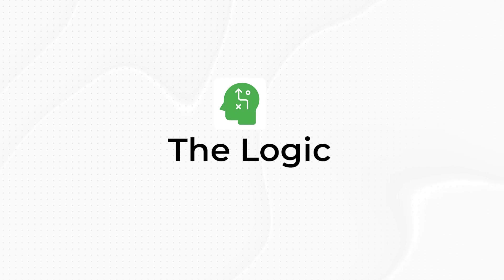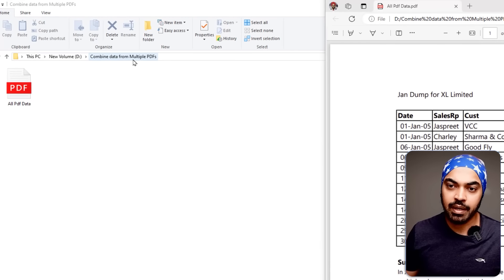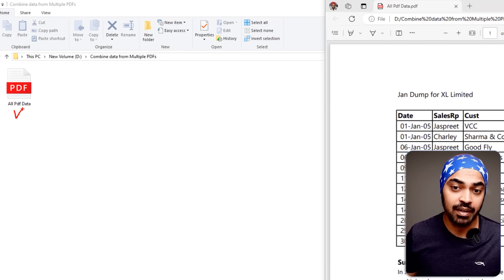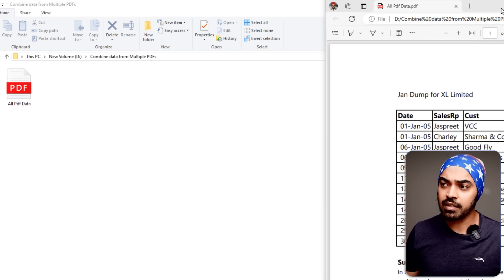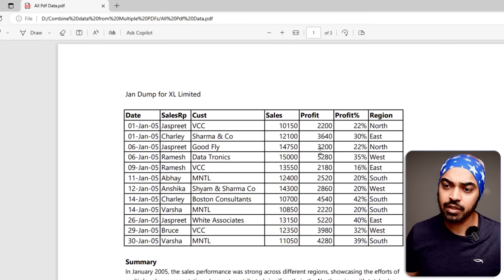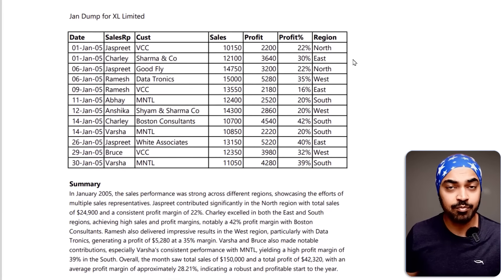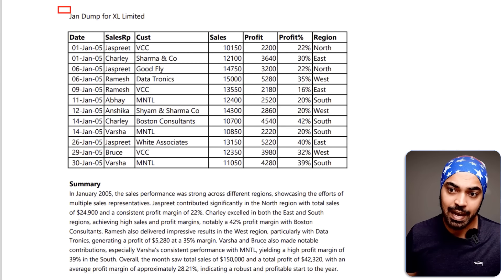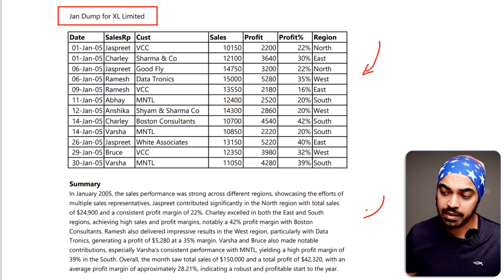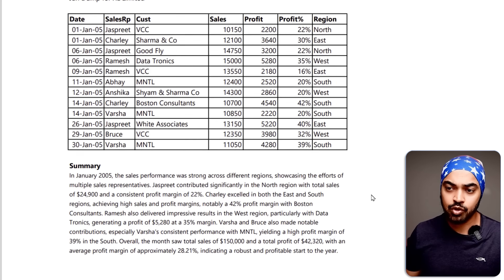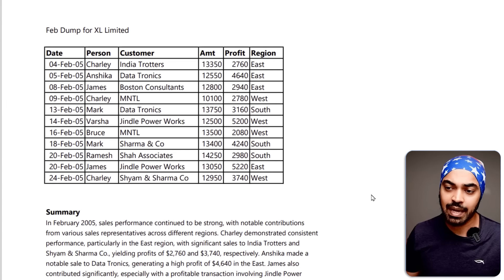Before we start, let's understand what problem we are facing, then lay out the logic of our approach, and then start to solve the problem in Power Query. I have this folder with a single PDF, but there could be multiple PDFs. If you take a look at the preview, we have multiple pages — page one has a January data dump for a company, and if you scroll to the second page you see similar data for February.